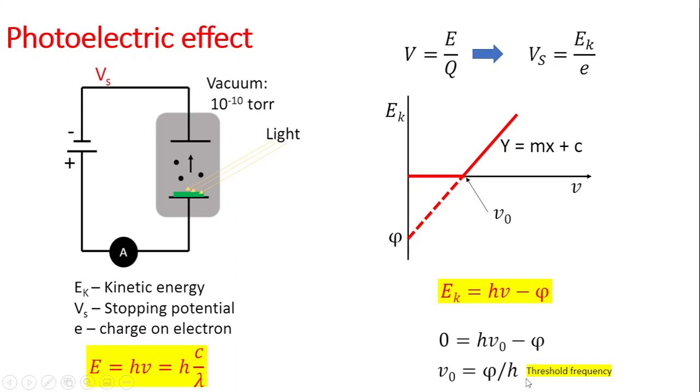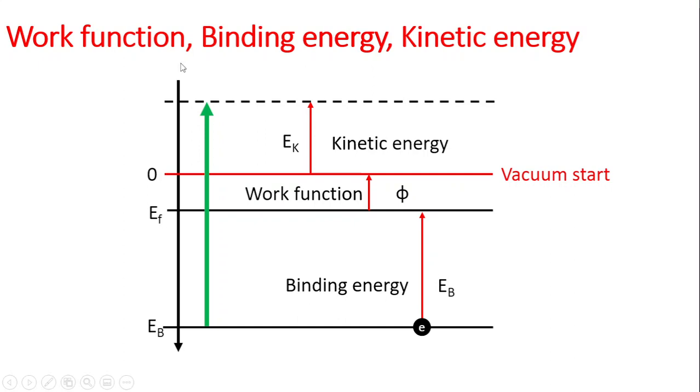The photoelectric effect is the basic principle behind XPS. Now let's understand work function, binding energy, and kinetic energy. When you shine light on a material, the light is absorbed and electrons are emitted from within the metal. The energy levels for electron emission have been divided into three classes, starting with electrons removed from inner orbitals.